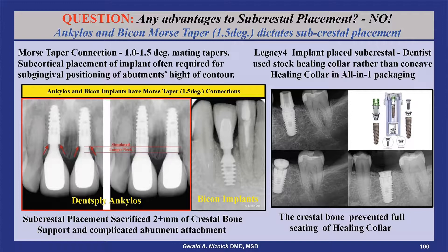With this type of placement, a contouring drill is often needed to remove crestal bone in order to seat the abutment. The case on the right, using a Legacy 4 implant placed subcrestal, shows that the use of an older healing collar without a concave neck failed to fully seat. It was replaced with the healing collar provided free with the implant.